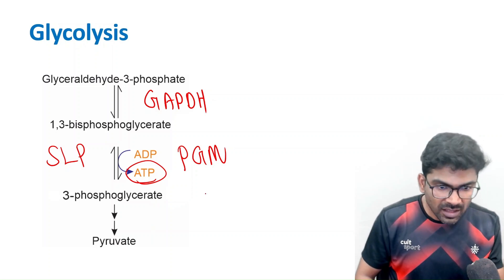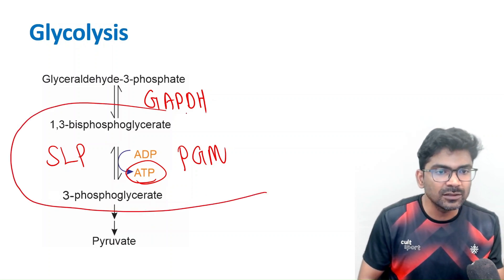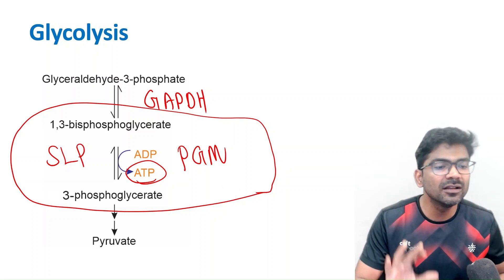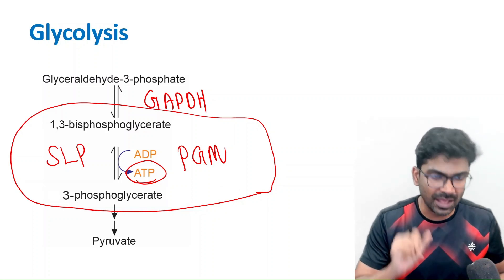This is a substrate level phosphorylation reaction. There is production of 1 ATP in this reaction. This reaction is catalyzed by phosphoglycerate kinase. In the subsequent step, finally pyruvate is produced. So what we are focusing on is this reaction: 1,3-bisphosphoglycerate to 3-phosphoglycerate. This is a substrate level phosphorylation reaction.